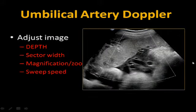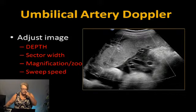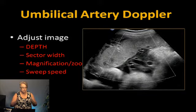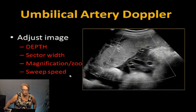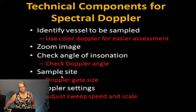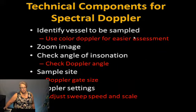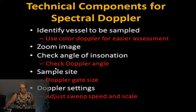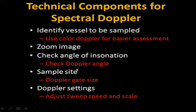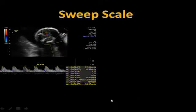To adjust your image: first adjust depth, making sure you're just penetrating to the area you're trying to evaluate. Change your sector width, then magnify or zoom, then change sweep speed if needed. Technical components: identify the vessel to be sampled, use color for easier gate placement, zoom in, check your angle of inclination, confirm your sample site is appropriate and within the vessel, and then adjust your Doppler settings — sweep and scale.